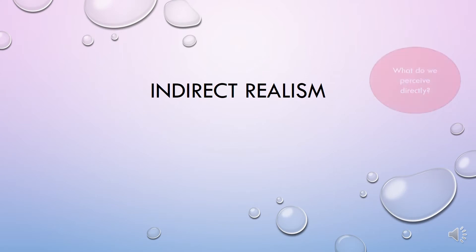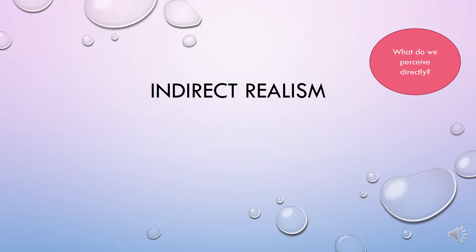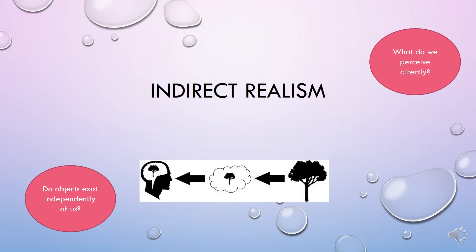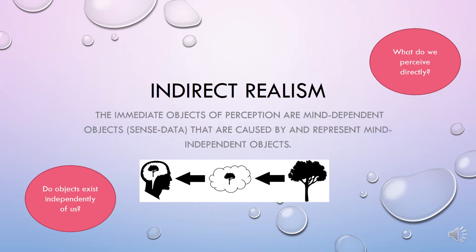So indirect realism — what is it? What are indirect realists going to tell us? What is it that we perceive directly? Do objects exist independently of us? This diagram is quite useful because it shows us that between the object, the tree, and our minds there's something else — a mediating stage — and this we call ideas or sense data. The best way to define indirect realism is to say it's a theory of perception that promotes the idea that immediate objects of perception are mind-dependent objects, or sense data, that are caused by and represent mind-independent objects.